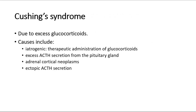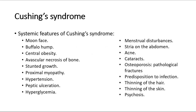Excess glucocorticoids causes Cushing's syndrome. Its causes include iatrogenic, due to therapeutic administration of glucocorticoids; excess ACTH secretion from the pituitary gland; adrenal cortical neoplasms; and ectopic ACTH secretion.